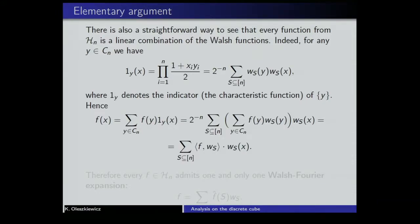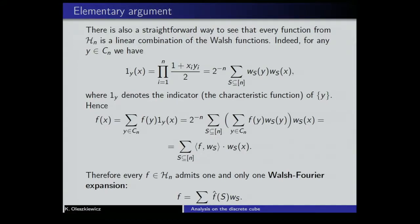Every function f can be expressed as a linear combination of indicator functions, and since we can expand every indicator function in Walsh functions and change the order of summation, we arrive at the formula showing that every function can be expressed as a linear combination of Walsh functions. We have proved in more than one way that every function on the discrete cube admits one and only one such expansion. This is called the Walsh-Fourier expansion, and the coefficients are called Walsh-Fourier coefficients — sometimes abbreviated as just the Fourier expansion.